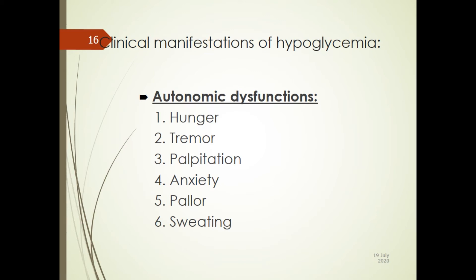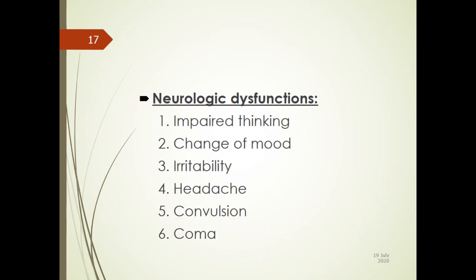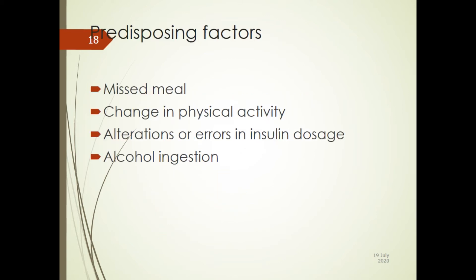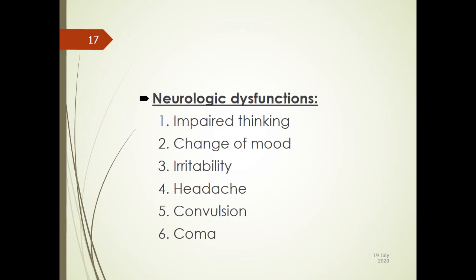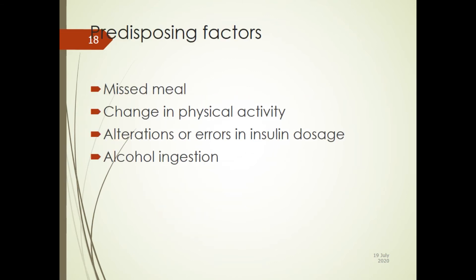Predisposing factors to hypoglycemia include missing a meal, increased physical activity beyond the usual without adjusting food intake or medications, and errors or alterations in insulin dosage — for example, changing the morning or evening dose either by mistake or intentional decision.